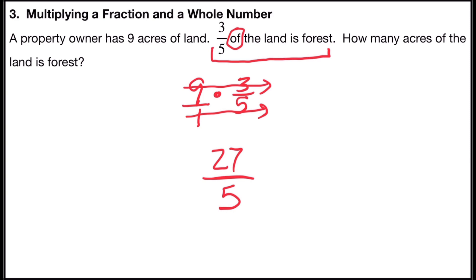And so I can rewrite that as a mixed number by taking five and dividing it into 27. Five divides into 27 five full times. Five times five is 25.